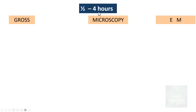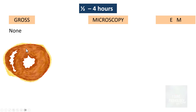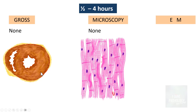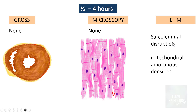From half an hour to four hours, grossly you will not find any identifiable lesions. Microscopically, sometimes you can find a bit of waviness of the myocardial fibers. On electron microscopy, you find sarcolemmal disruption and mitochondrial amorphous densities.